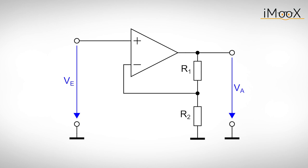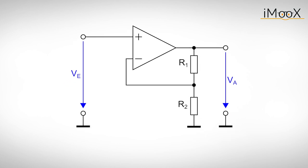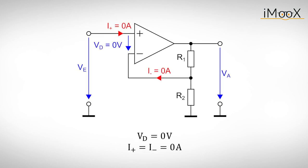As an example, consider this amplifier circuit. We want to know how the output voltage depends on the input voltage. We start off by applying the two rules from before.